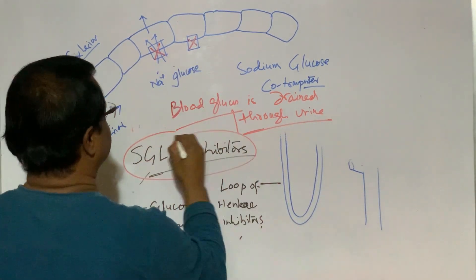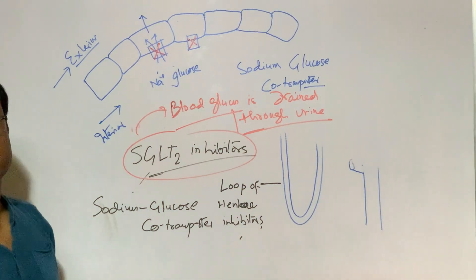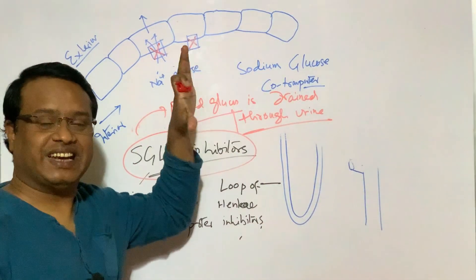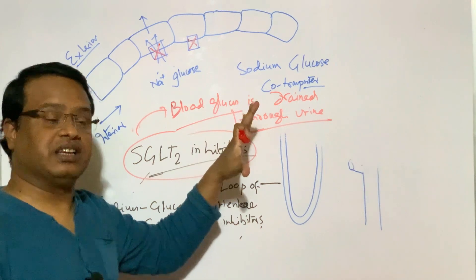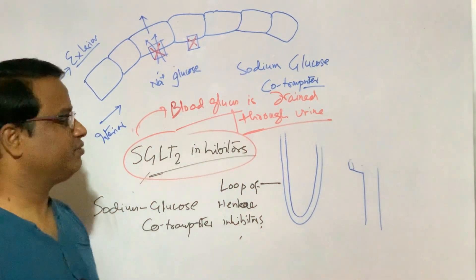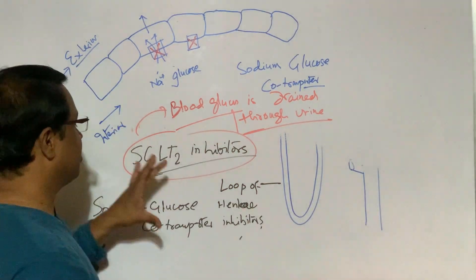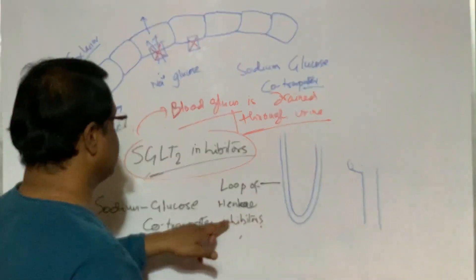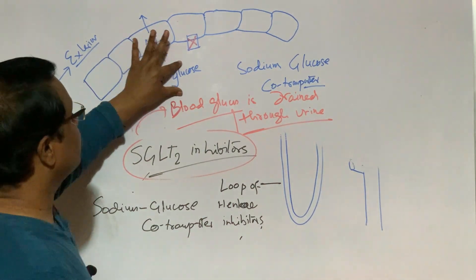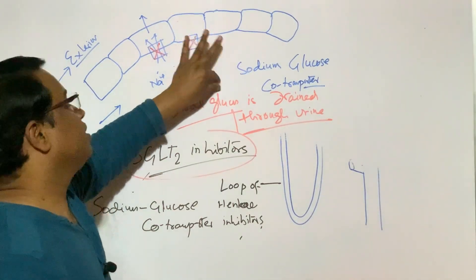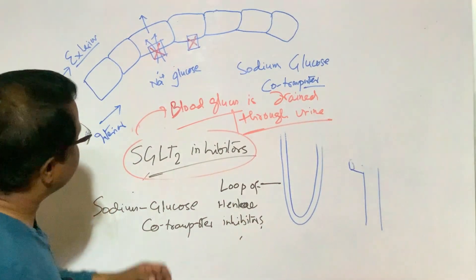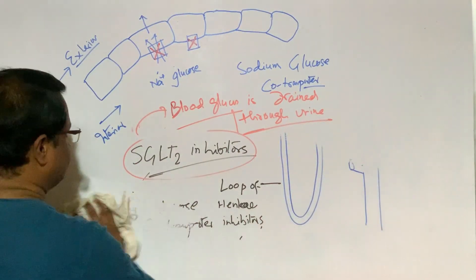Blood glucose is drained through urine. No role of insulin here, no role of insulin resistance here. The main function of this inhibitor is to block sodium glucose co-transporter and by this way sodium and glucose is drained out with urine. So, that is the mechanism of action of the drug.